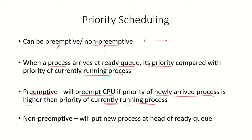If scheduling is implemented in a non-preemptive manner and the new process has higher priority, it will be placed at the head of the ready queue. The currently running process will continue, and only when it releases the CPU will the new process be given the CPU.